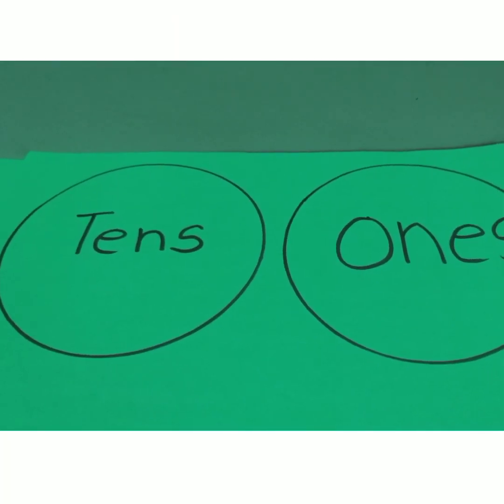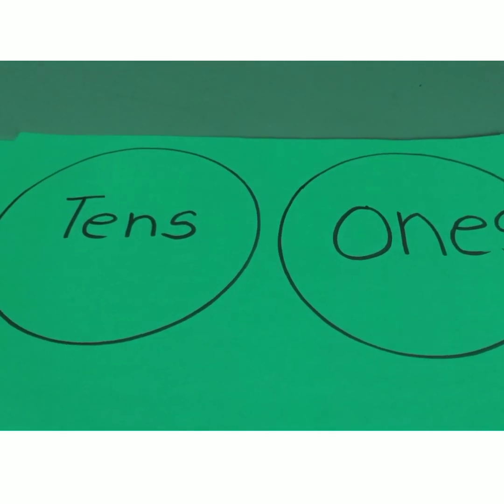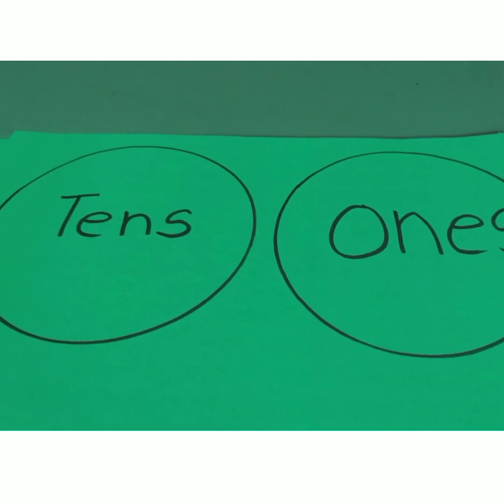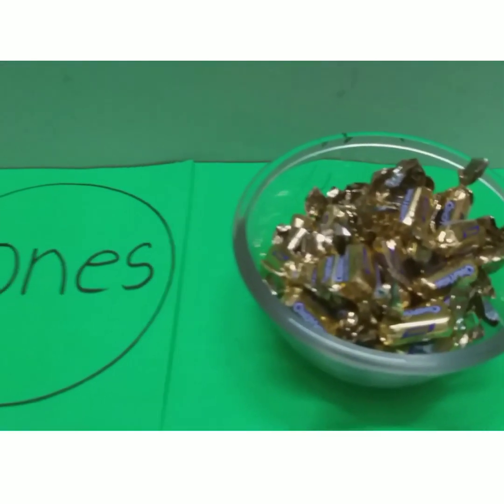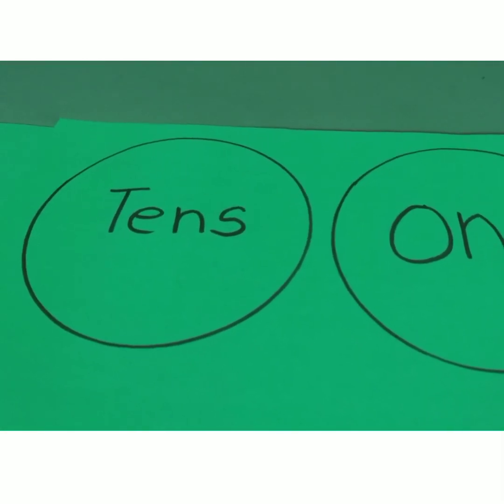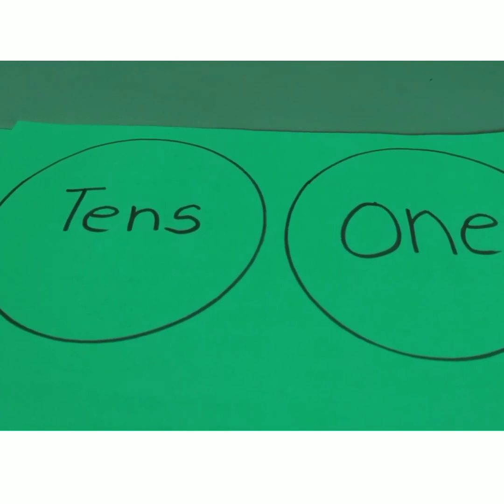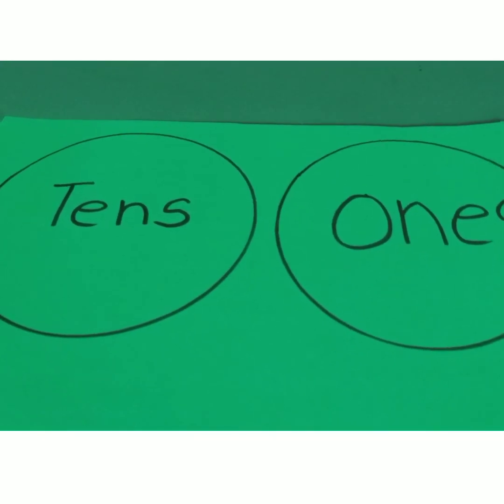To make the child understand concept of tens and ones very clearly, you may play this game in a very interesting way. Here I am going to use toffees. You may use macaroni, seeds, or beads, whatever things are available at home. So ask the child to count ten toffees and keep it in the circle of tens.